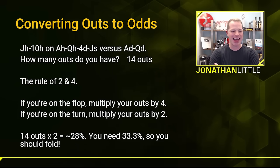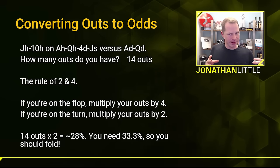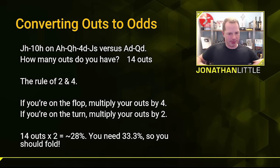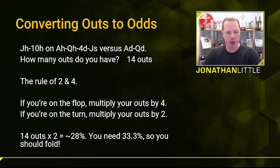You have 14 outs. You have nine hearts to make a flush — none of those give the opponent a full house. You have three more kings: one of them is a heart which gives you a flush, but the other three give you a straight. And then you have two jacks to make three of a kind. So you have 14 outs. To help simplify this, there's the rule of two and four. If you're on the flop and your opponent goes all in, you multiply the number of outs by four to determine roughly how often you will get there — this presumes you'll see both the turn and river. If you're on the turn, you multiply your number of outs by two. So here we have 14 outs on the turn: 14 times 2 equals 28%, meaning you'll improve about 28% of the time.